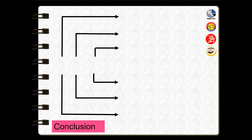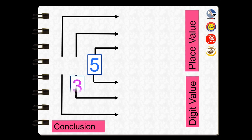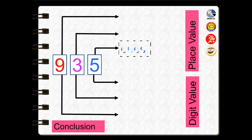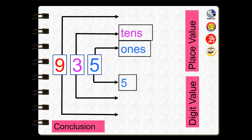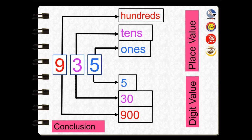We have come to the conclusion of what we learned today — place value and digit value. The number given is nine hundred and thirty-five. Place value of five is ones; digit value of five is just five. Place value of three is tens; digit value of three is thirty. Place value of nine is hundreds; digit value of nine is nine hundred.